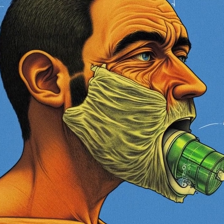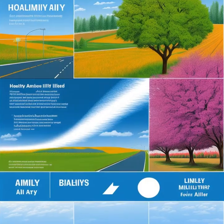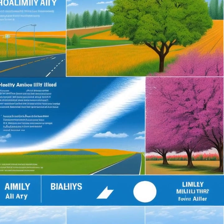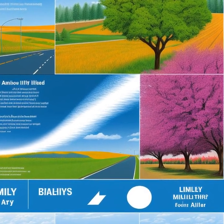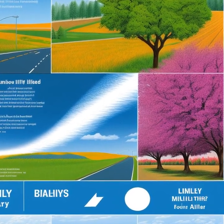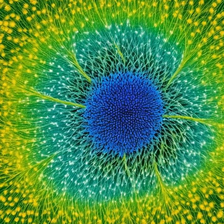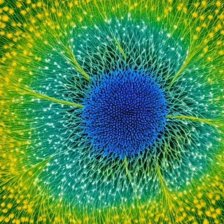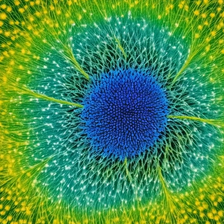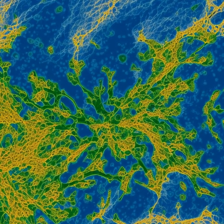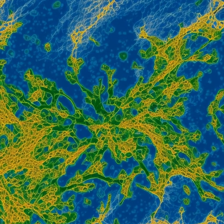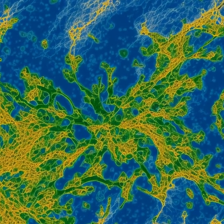Understanding the pathophysiology of asthma. Asthma is a chronic inflammatory disease of the airways which can cause symptoms such as shortness of breath, chest tightness, coughing, and wheezing. The main factors involved in the development and progression of asthma are inflammation, airway hyperresponsiveness, and bronchoconstriction.